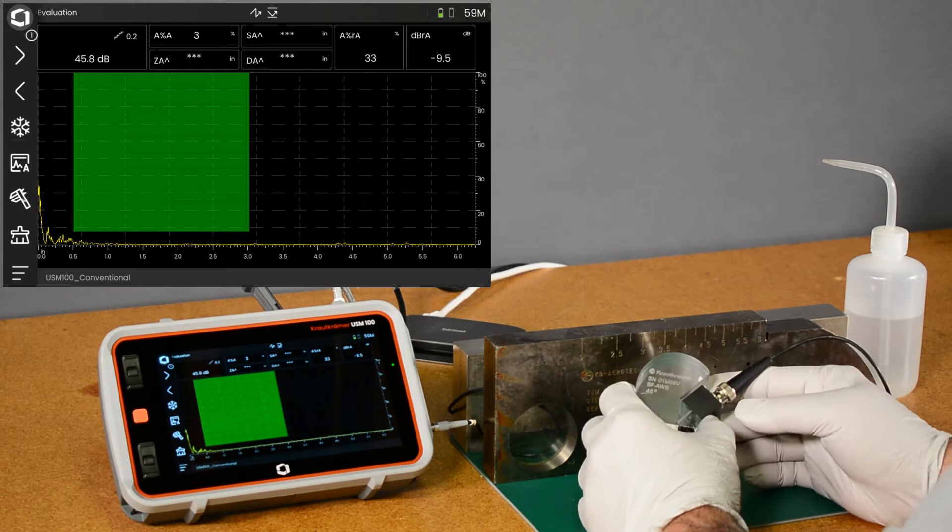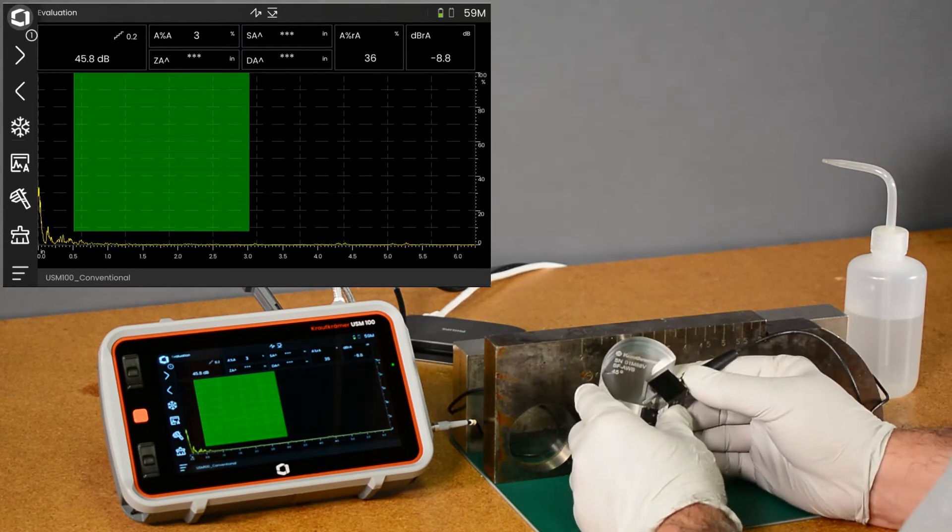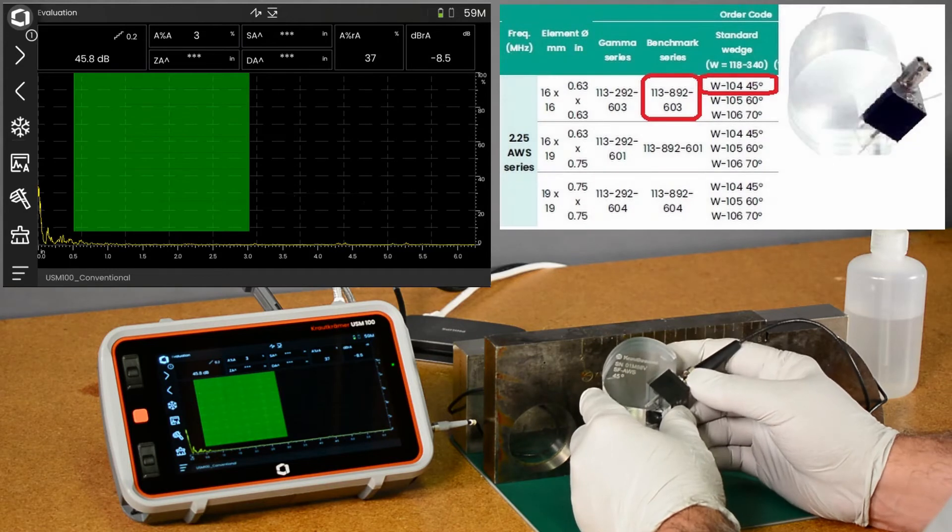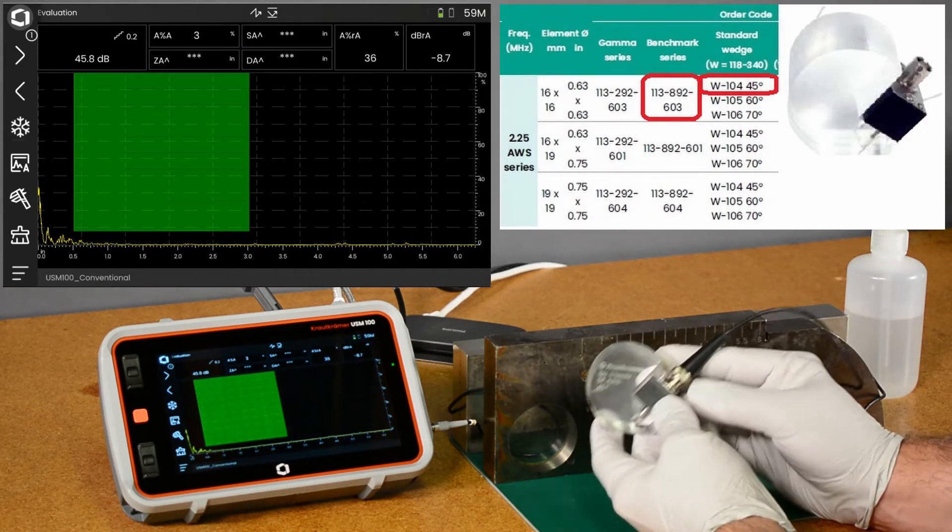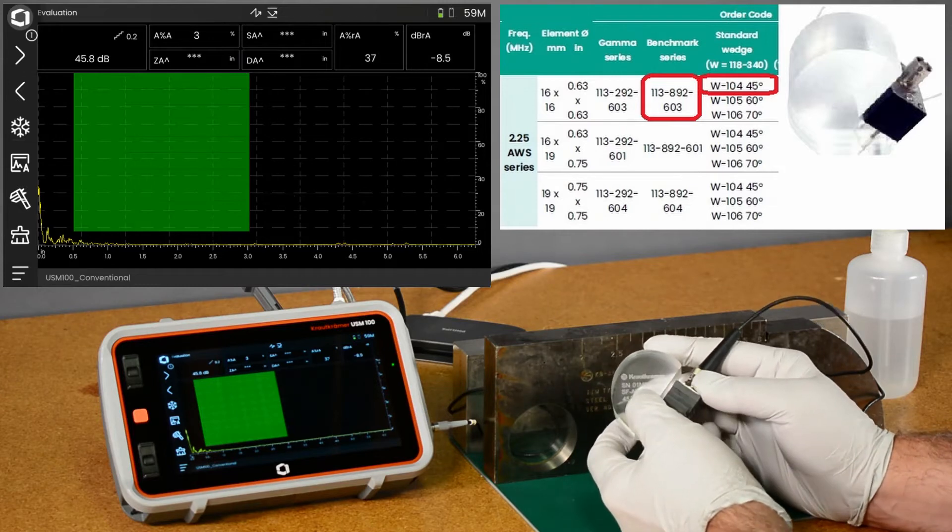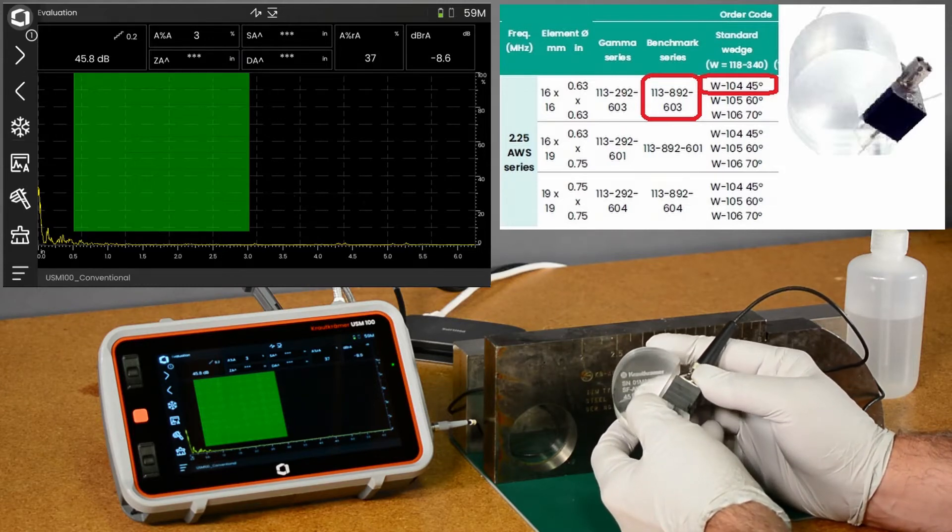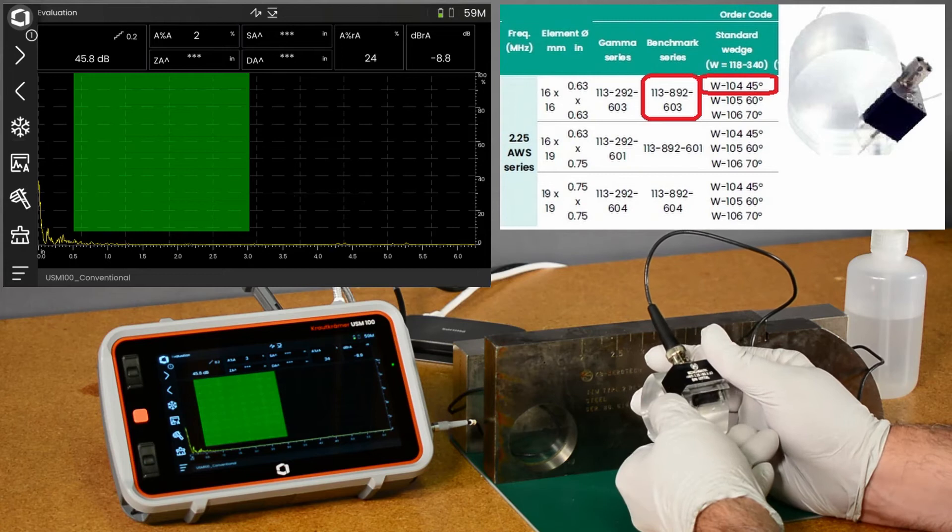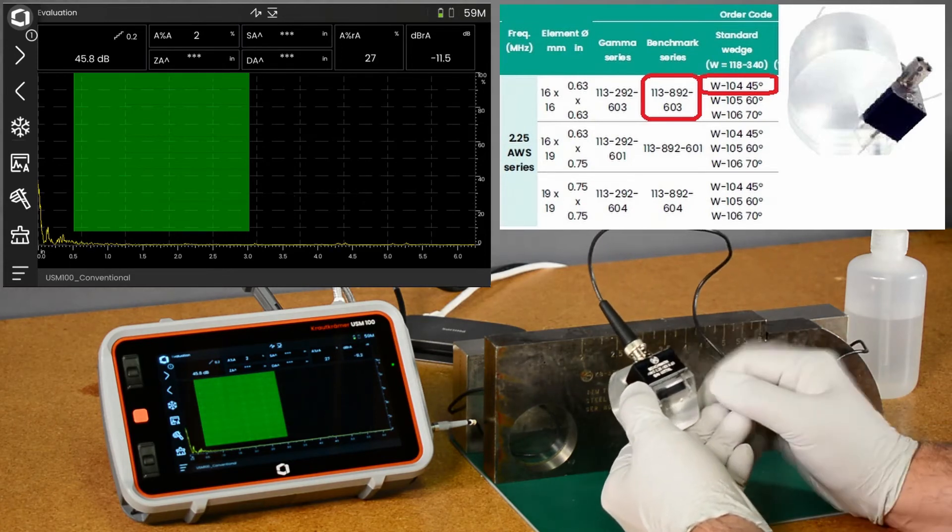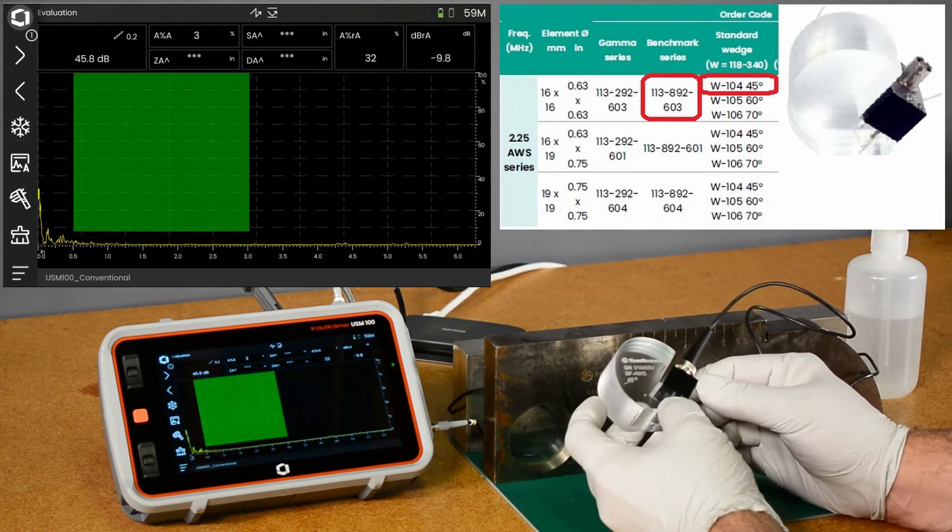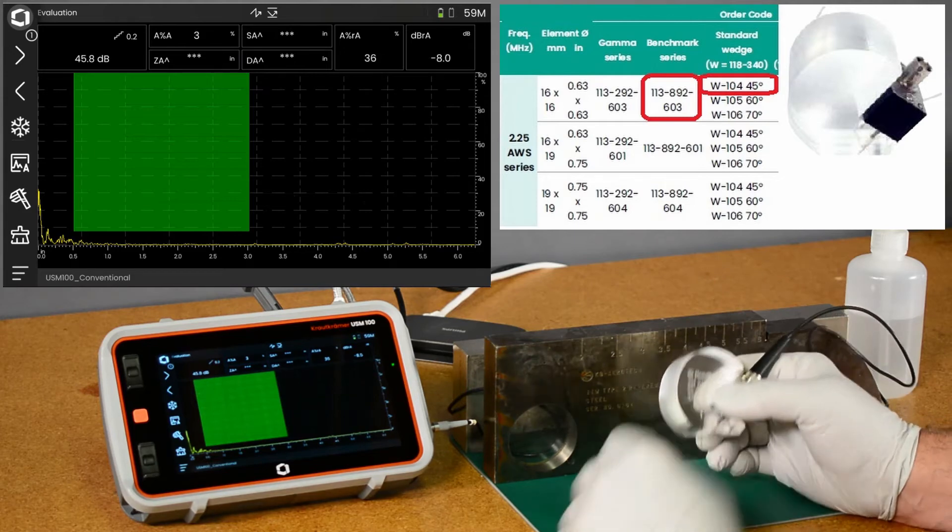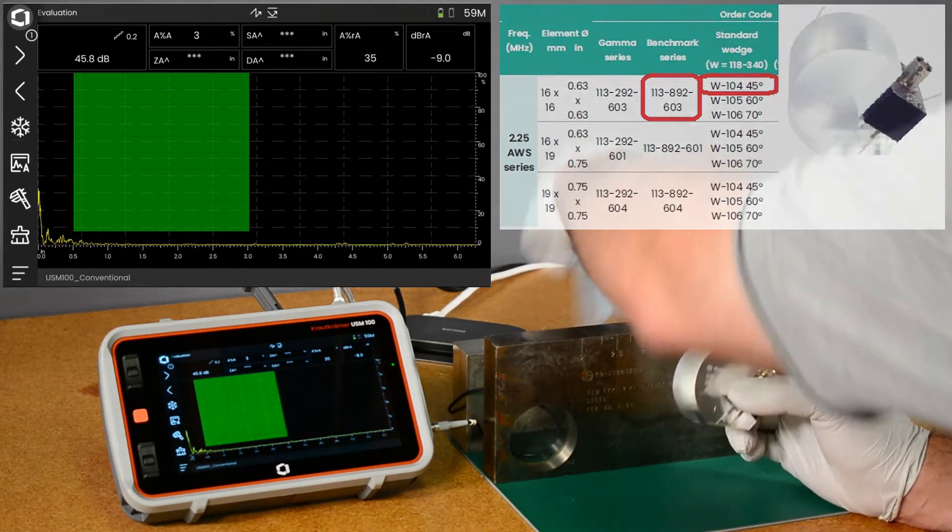We're going to be looking at AWS D1.1. The AWS inspection uses particular probes and wedges. The wedges have this familiar snail shape to them. This is a 45 degree AWS wedge on a two and a quarter megahertz five eighth inch square benchmark probe. This is one of the classic AWS probe and wedge combinations.